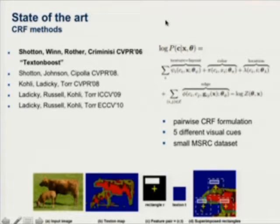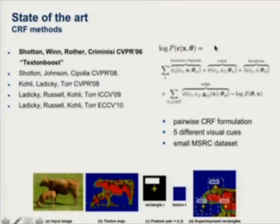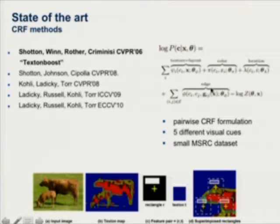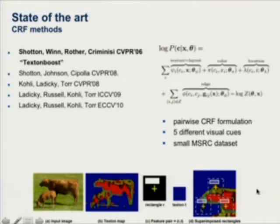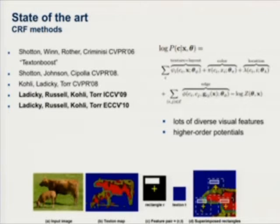A brief review for those not familiar with the field. A lot of interest started to gather in 2006 with TextonBoost. The basic model used to tackle this problem is a pairwise CRF where every pixel becomes a node. You have unary potentials — multiclass appearance classifiers that take a patch around the pixel and predict one of the semantic classes — and pairwise potentials that enforce label smoothness. Later works achieving state of the art, such as those in Phil Torr's group, moved to many more features and more complicated structures such as higher-order potentials, which capture statistical dependencies that pairwise potentials alone cannot model.